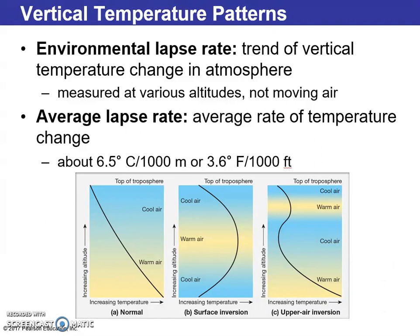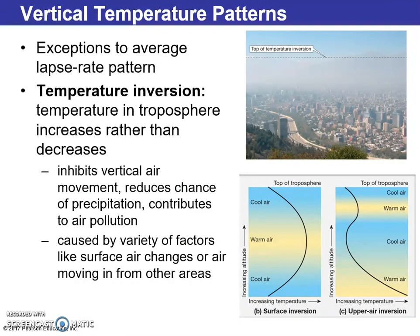We have the environmental lapse rate, which in our temperature scale is 3.5 degrees Fahrenheit per thousand feet. As we go up in elevation, air pressure decreases and there is less weight from the air above, so the temperature decreases at that rate of 3.5 degrees Fahrenheit per thousand feet — or 6.5 degrees Celsius per thousand meters.